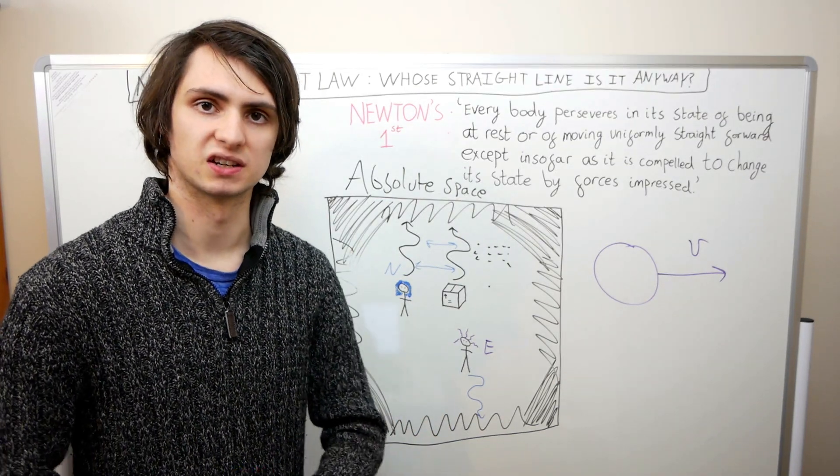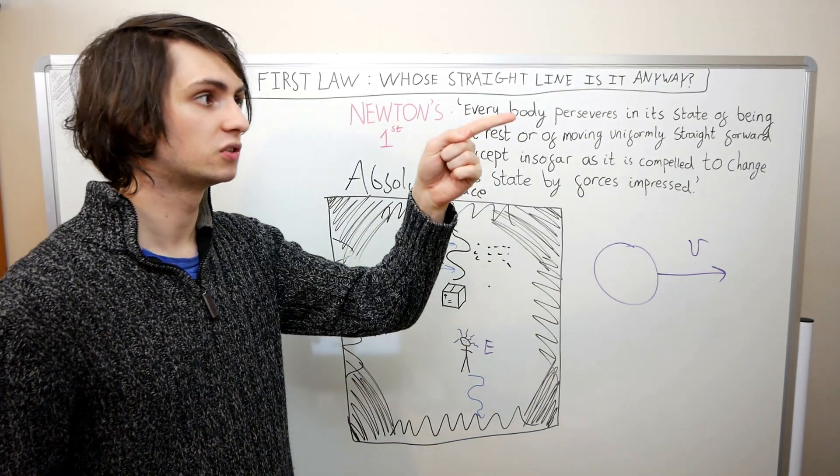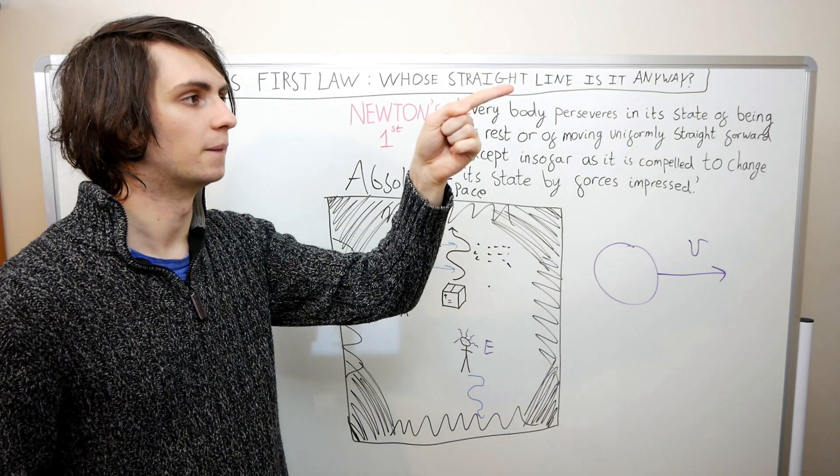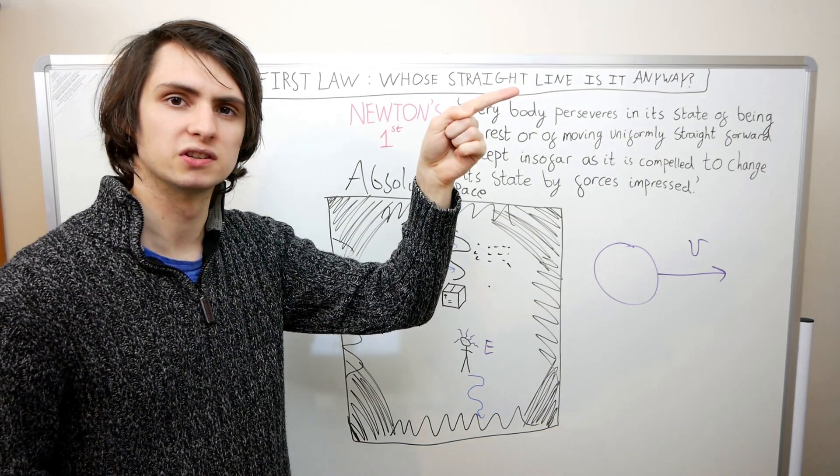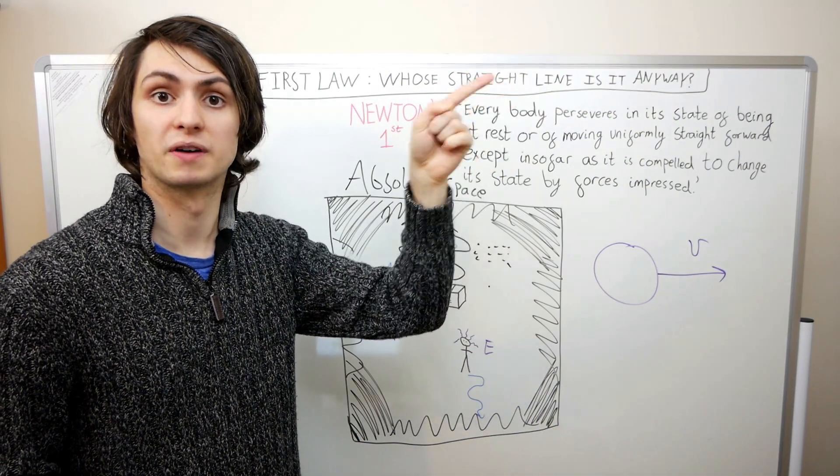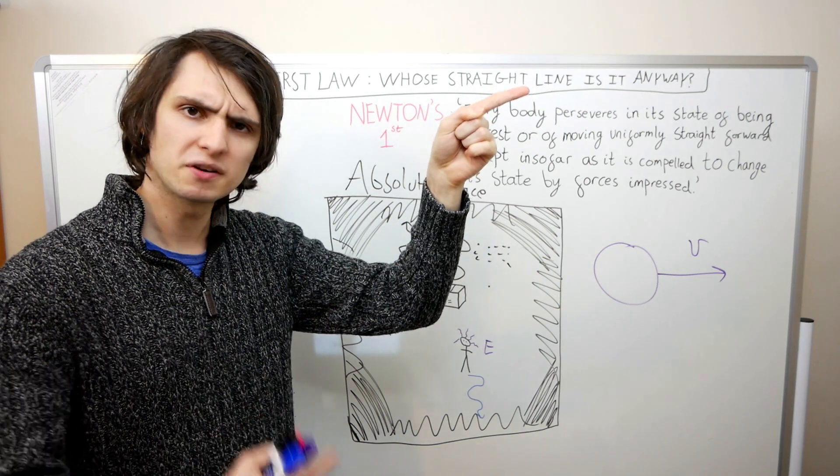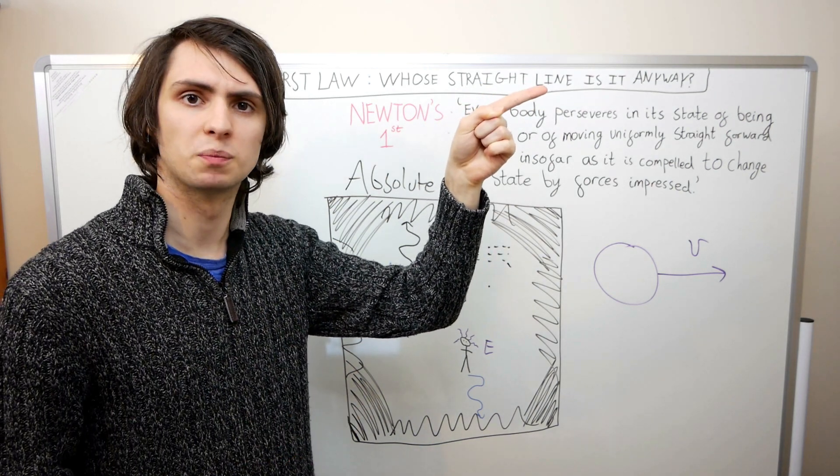Let's assume that absolute space exists. And suppose you point to a place you can see right now. In the instant you pointed, you will have identified a point of absolute space. But where is that point a second after you pointed at it?